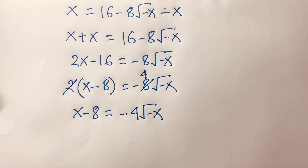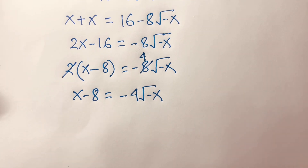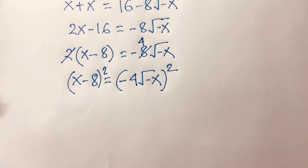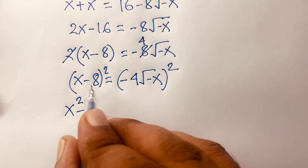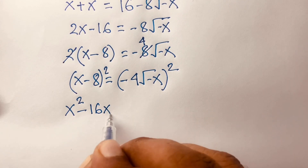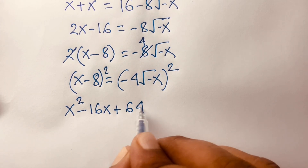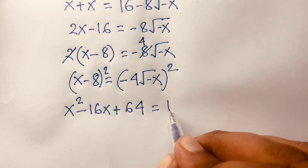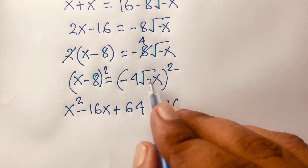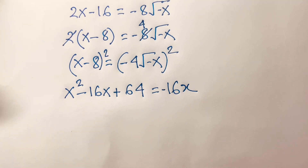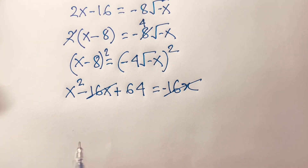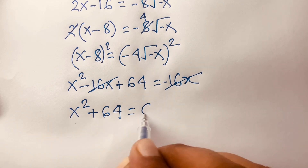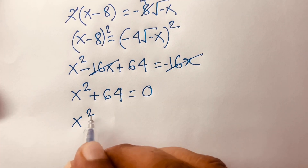Squaring both sides again, the left side becomes x² minus 2 times x times 8, which is 16x, plus 8² which is 64. On the right side, minus squared becomes plus, so 4² times minus x gives minus 16x. Simplifying, the 16x terms cancel and we get x² plus 64 equal to 0.